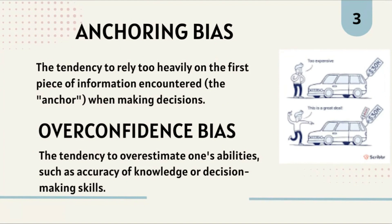Anchoring bias is the tendency to rely too heavily on the first piece of information when making decisions. This occurs when we give undue weight to the first piece of information we receive. For example, the first price you see for a car is $20,000 — it sets a benchmark in your mind, and all subsequent prices are judged relative to that anchor. This can change how we see what makes a good deal.